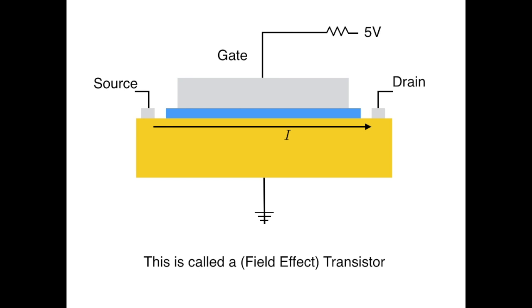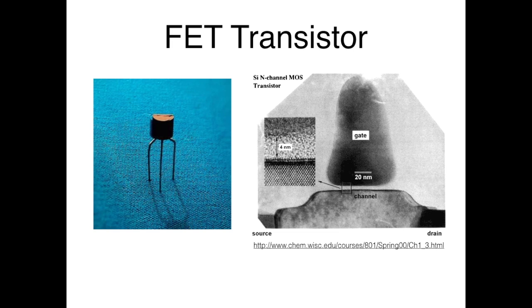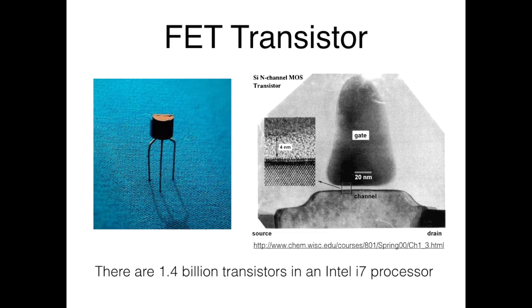This device is called a field effect transistor, a FET transistor. Here's what a FET transistor looks like — this is one you can buy individually packaged, but they make them much, much smaller. Here's an electron microscope scan of a FET transistor. You can see the gate on top, the semiconductor on bottom, the insulation layer between them — there's only four nanometers of insulation layer. The source is on the left and the drain on the right. There are 1.4 billion transistors in an Intel i7 processor. This is the symbol of a FET transistor in a circuit: the source is on top, the drain is on bottom, and the gate is on the left.